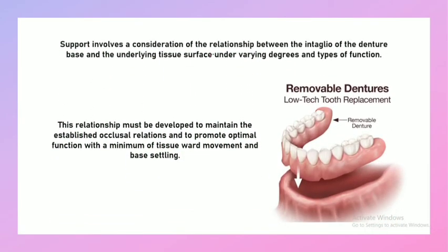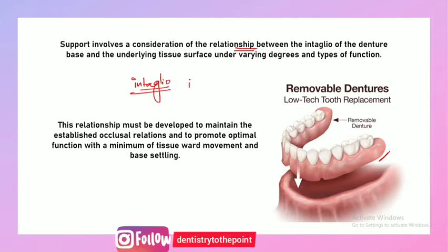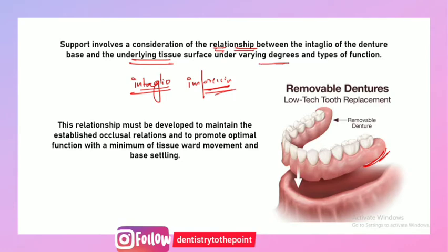Support involves a consideration of the relationship between the inner surface — also called the intaglio or impression surface — of your denture, as well as the underlying tissues. It involves a consideration of relationship between the intaglio surface of a removable complete or partial denture and the tissues on which the denture is going to seat. This relationship depends upon varying degrees of forces as well as types of function, and is necessary to maintain the established occlusal relations.